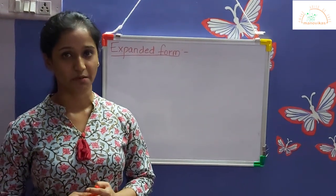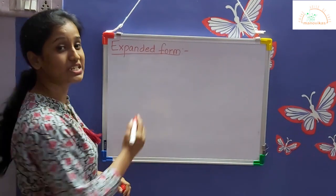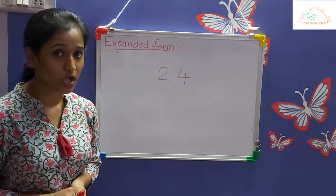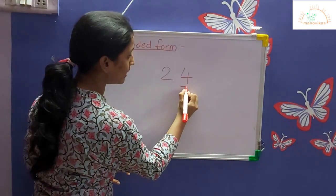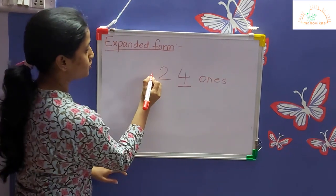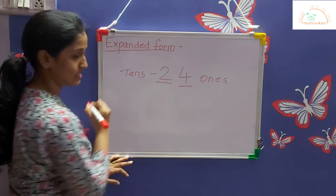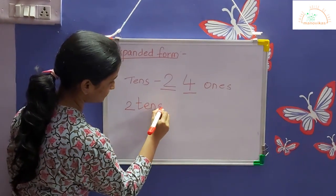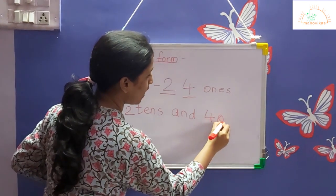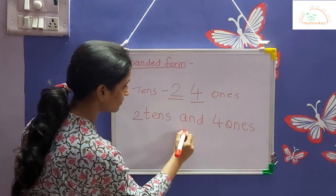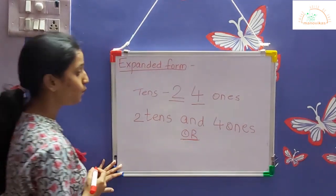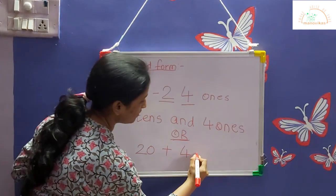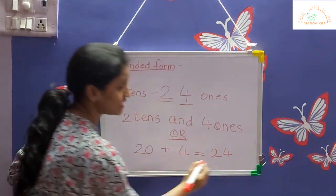Let us now learn to write the expanded form using place value. First we will do two-digit numbers — tens and ones. We take the number 24. Tell me students, which is tens and which is ones? Correct — 4 is ones and 2 is tens. So we can write the expanded form as 2 tens and 4 ones, or we can write it as 20 plus 4, which equals 24.